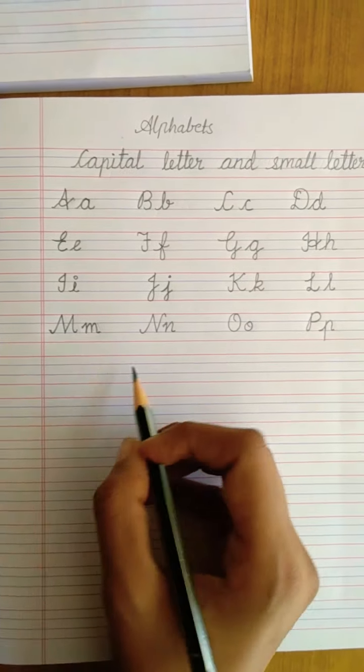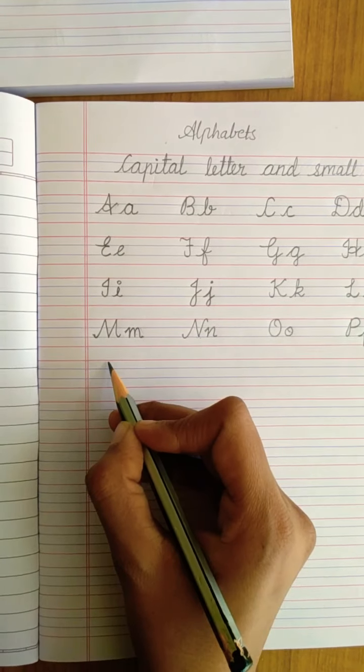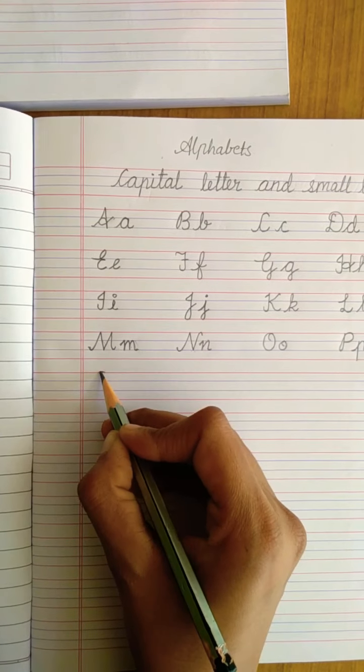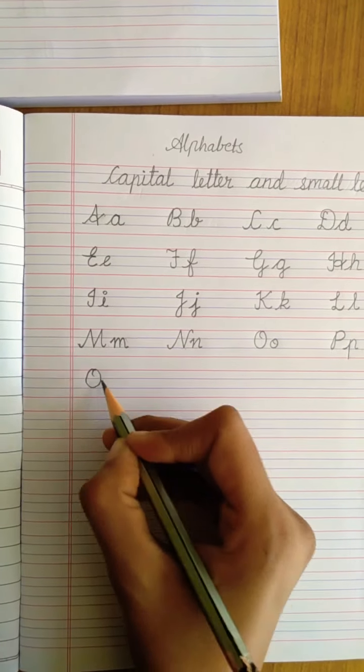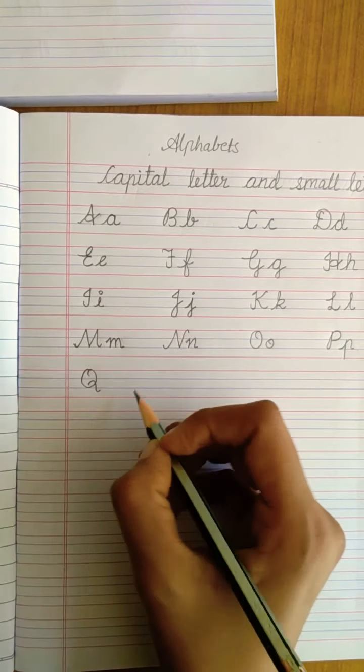This is your letter P. Then come to letter Q. Same like O, you have to make a circle and a wave here. Q.